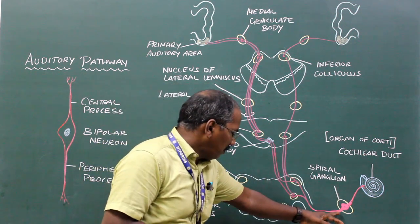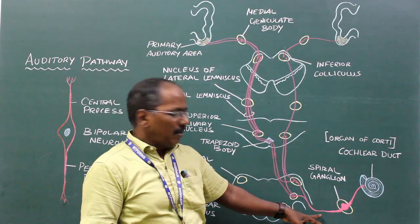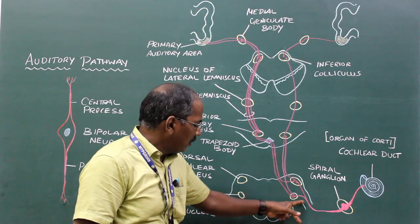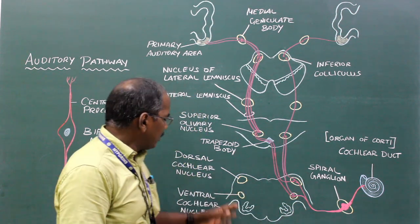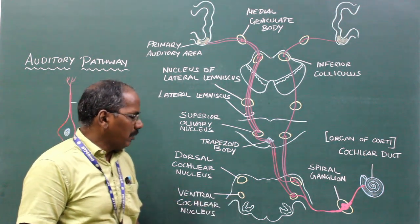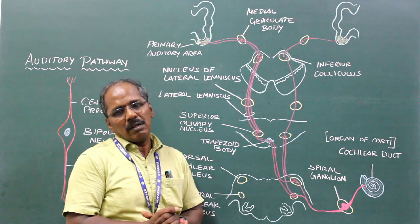The central process forms the cochlear nerve. The fibers of the cochlear nerve bifurcate and relay in the dorsal and ventral cochlear nuclei.